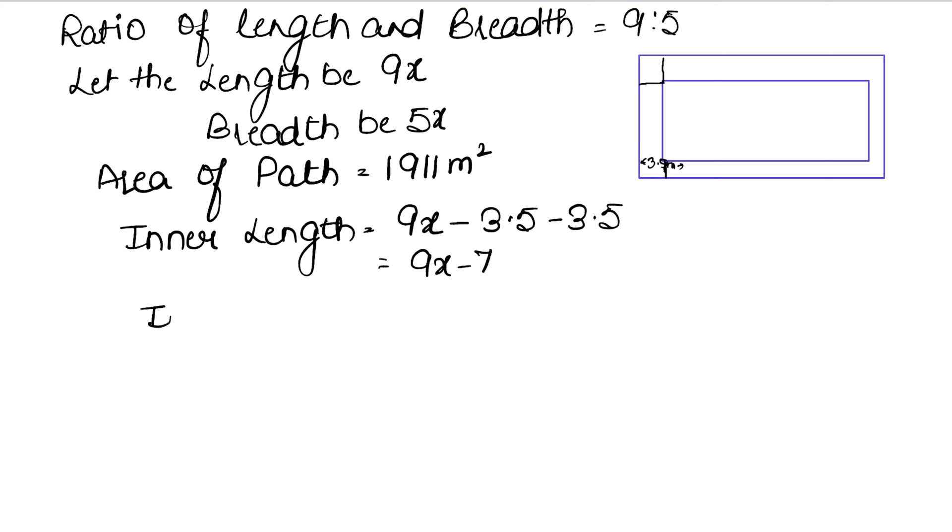Similarly, inner breadth - how will we find it? From the outer breadth, subtract 3.5 from this side and 3.5 from that side. The outer breadth was 5x, so minus 3.5 from both sides gives us 5x minus 7.